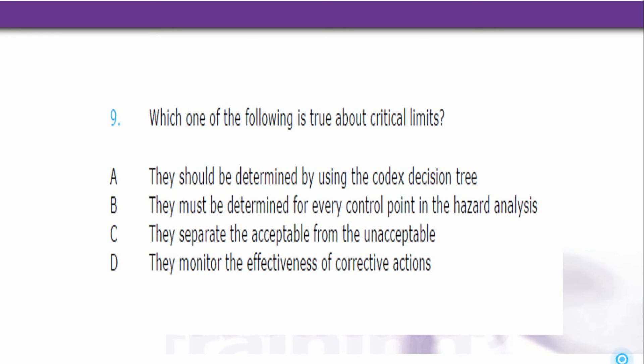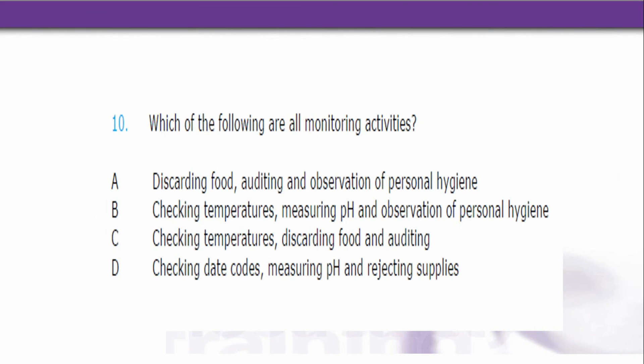And lastly, number 10. Which of the following are all monitoring activities? A. Discarding food, auditing, and observation of personal hygiene. B. Checking temperatures, measuring pH, and observation of personal hygiene. C. Checking temperatures, discarding food, and auditing. D. Checking date codes, measuring pH, and rejecting supplies.